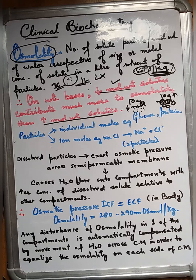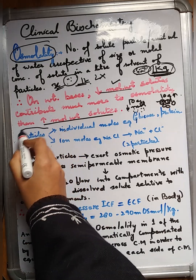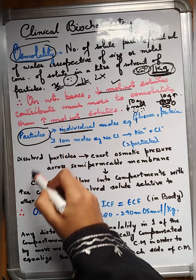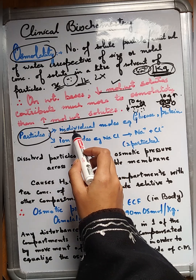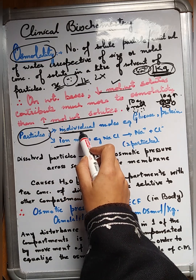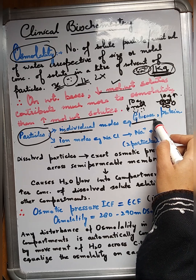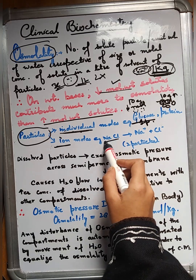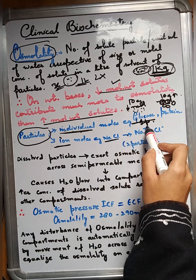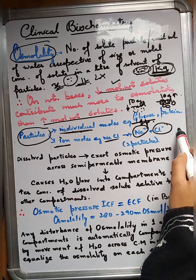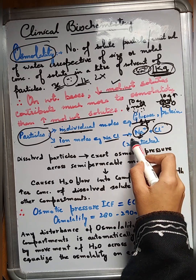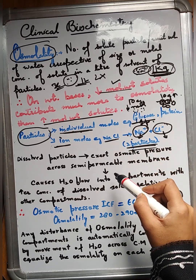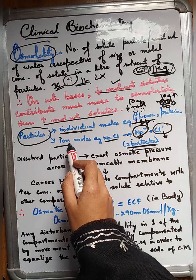Particles can exist in two different forms — as individual molecules or as ions. For example, a glucose molecule contributes as one particle. Whereas NaCl, when it dissociates in water, forms Na+ and Cl−. Na+ is one individual particle and Cl− is another individual particle. That means two particles contribute towards osmolality when they exist in the form of ions.